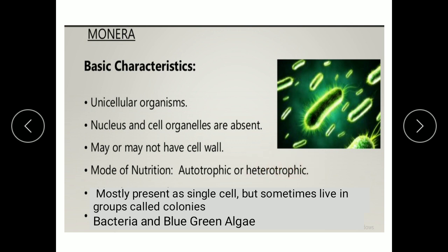They are mostly present as a single cell, but sometimes they live in groups called colonies. Bacteria and blue-green algae are examples of Kingdom Monera.